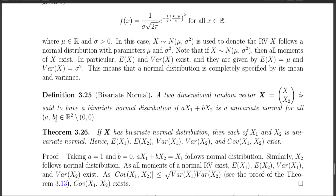Note that the case a equals 0 and b equals 0 is excluded, because if both a and b are 0, then the combination is exactly 0. So if you take any non-zero linear combination of the components and it is a univariate normal random variable, then we say that X, consisting of X1 and X2, has a bivariate normal distribution.